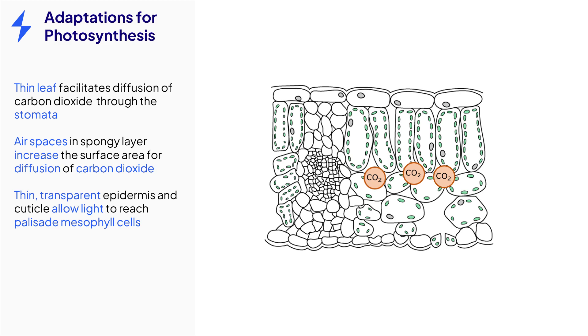Both the upper epidermis and cuticle are thin and transparent to allow light to reach the chloroplasts in the palisade mesophyll cells. These cells are located near the top of the leaf in order to maximize the absorption of light by the chloroplasts.